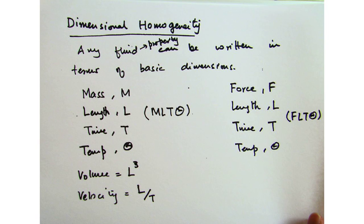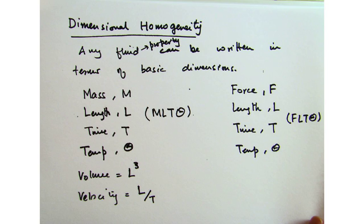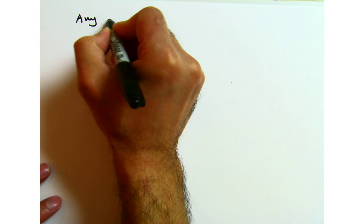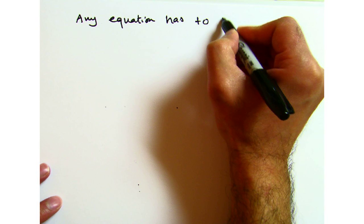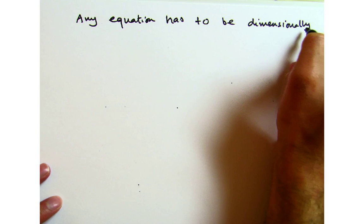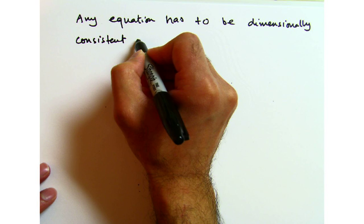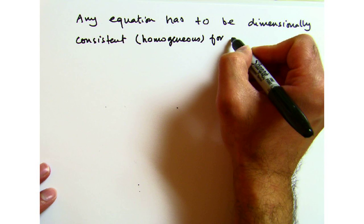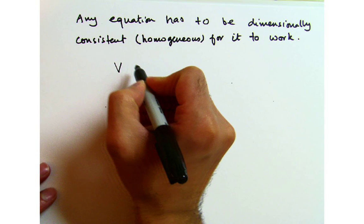Let's take an example. This is the equation where V equals V-naught plus a times t. Here V is the velocity. This equation tells you what the velocity of some substance would be if some acceleration is applied over a period of time. Acceleration is the rate of change of velocity over time.